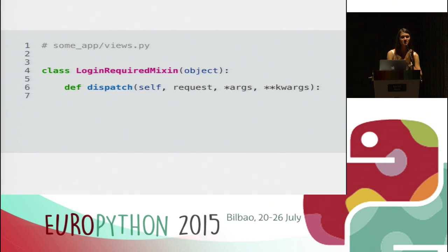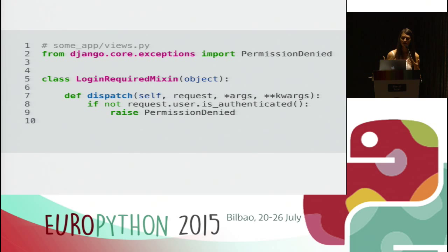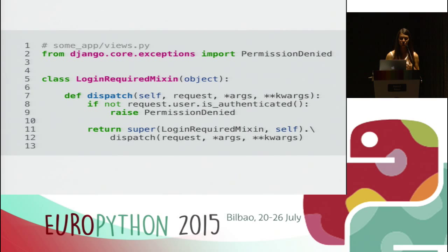We want to check if the user is authenticated before we start processing the request. One of the first methods to be called when processing a request is dispatch. We use the same signature of the dispatch method as in the base view class. On lines 8 and 9, if the user is not authenticated, we raise a PermissionDenied exception — imported from django.core.exceptions on line 2. One last thing: to handle the case when a user is authenticated and we want to allow them to access the page, we call the super method on dispatch to resume the work of the base method. Please do provide docs and tests.